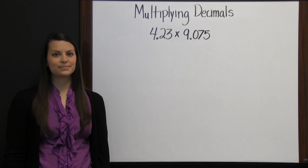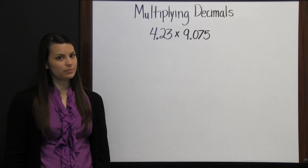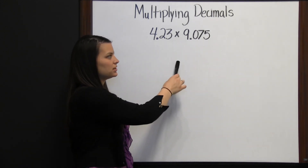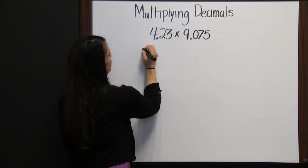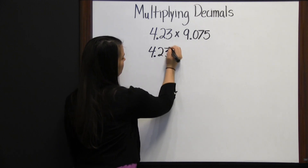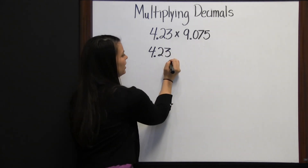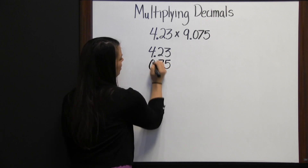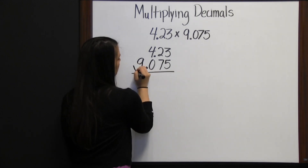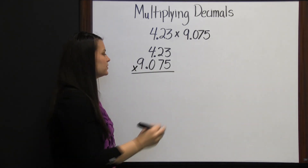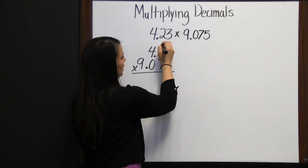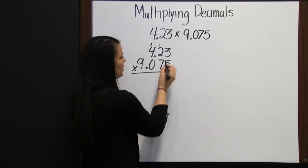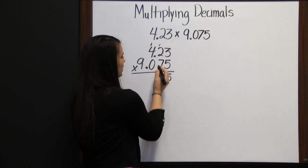Multiplying decimals. When multiplying decimals, instead of lining up the decimal point, we line up the last digits on the right. So if we were multiplying four and twenty-three hundredths times nine and seventy-five thousandths, three is the last digit of the first number and five is the last digit of the second. Now we multiply just like whole numbers. Starting with five: five times three is fifteen, carry the one. Five times two is ten, plus one is eleven, carry the one. Five times four is twenty, plus one is twenty-one.